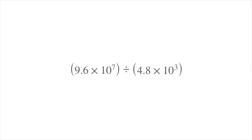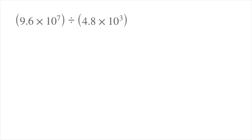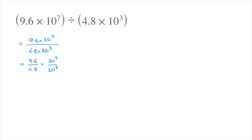We're dividing the first number by the second. So the first thing I like to do is state that this equals 9.6 times 10 to the power of 7 over 4.8 times 10 to the power of 3. Now I like to split this fraction into two. I'm going to write that this equals 9.6 over 4.8 times 10 raised to the power of 7 over 10 raised to the power of 3. We're allowed to do that because if we have a times b over c times d, then that equals a over c times b over d.